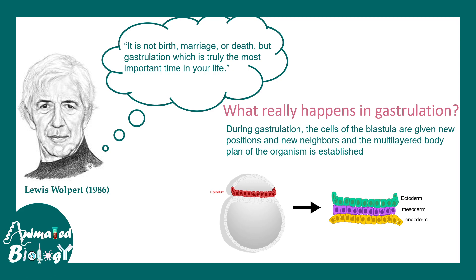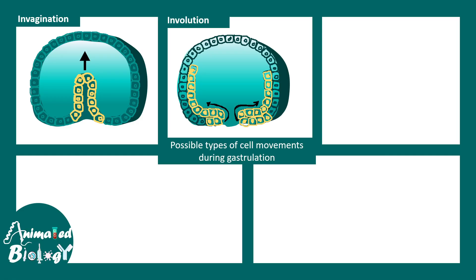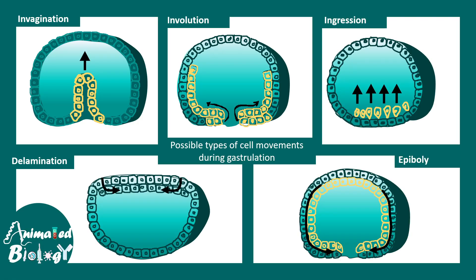This movement is highly coordinated, and each movement has distinct features. There are different kinds of movement that can possibly occur during gastrulation, like invagination, involution, ingression, delamination or even epiboly. Not all these movements happen all at once. There could be a combination of movements occurring in one organism, and these morphogenetic movements differ throughout the animal kingdom. There is a separate video on morphogenetic movements.